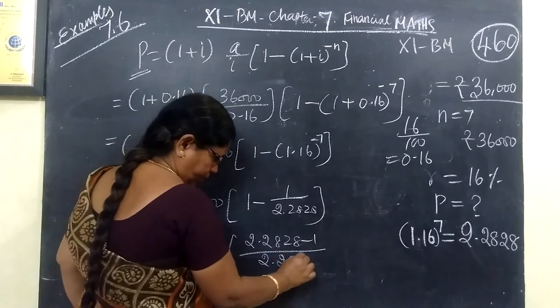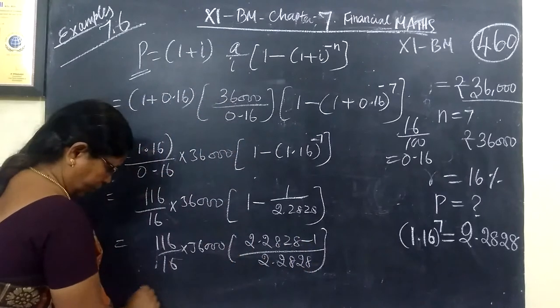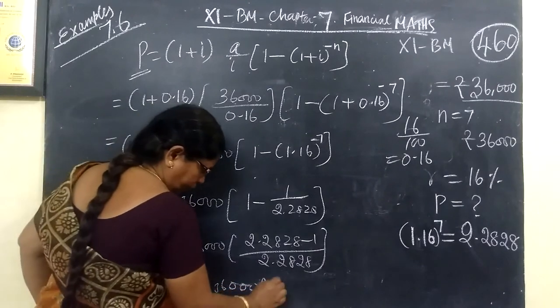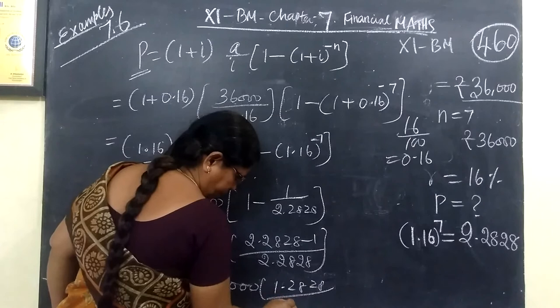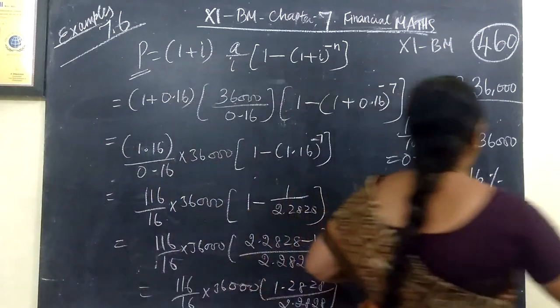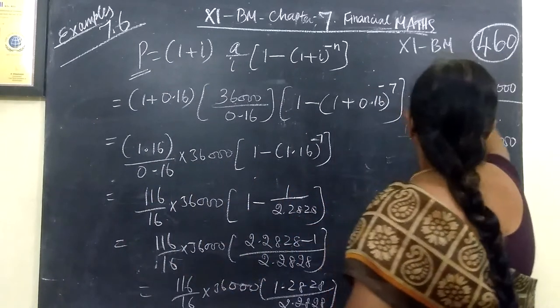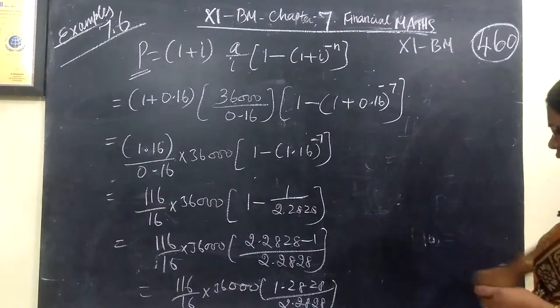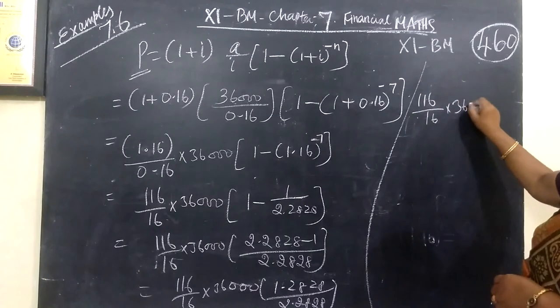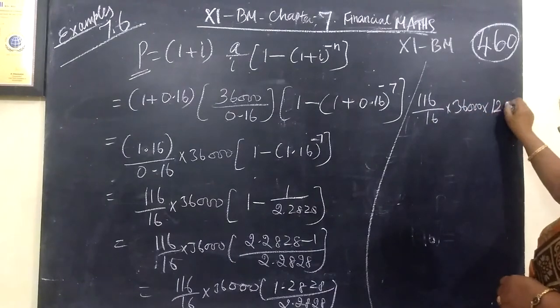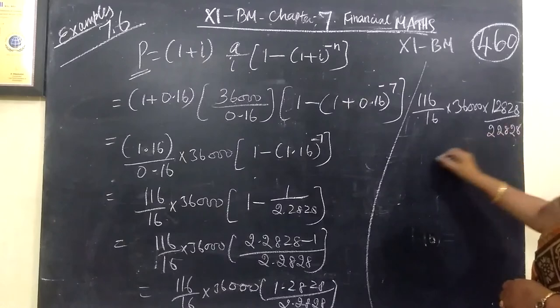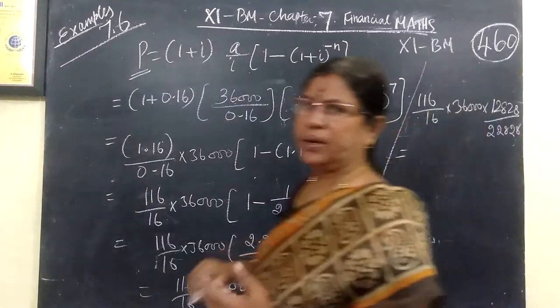Then minus 1 by 2.2828. Here you are writing 116 by 16, then 36,000 into 1.2828, then 1.2828 by 2.2828. This is just using the calculator, as you are writing.